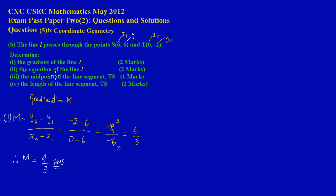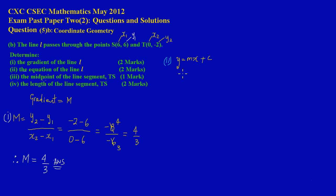In part 2, they're asking us to find the equation of the line. The general form of the equation of a straight line is y = mx + c, where c is the y-intercept, m is the gradient, and x and y are corresponding coordinate values.